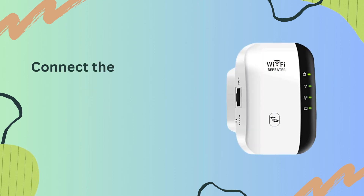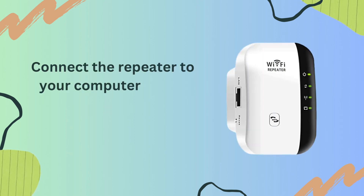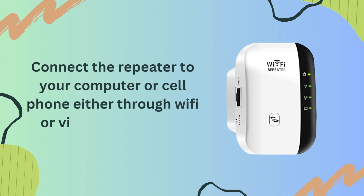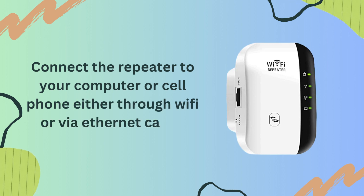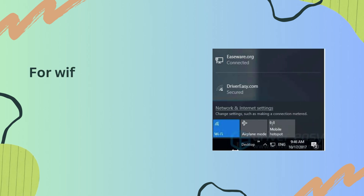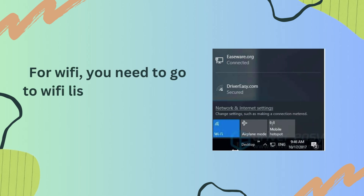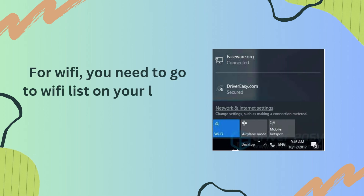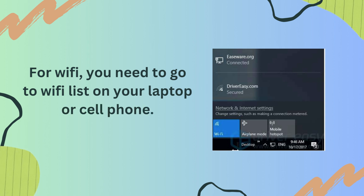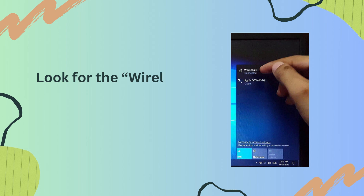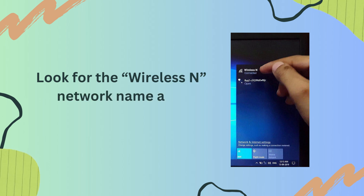Connect the repeater to your computer or cell phone either through Wi-Fi or via Ethernet cable. For Wi-Fi, go to the Wi-Fi list on your laptop or cell phone. Look for the wireless N network name and connect to it.